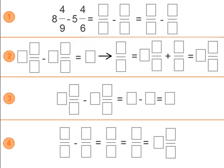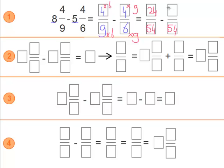Let's move on to a harder problem. This problem looks a little scary but we'll go through it step by step. We have 8 and 4 ninths minus 5 and 4 sixths. We need to find a common denominator, so we multiply them by each other: 9 times 6 and 6 times 9, which equals 54. Now we multiply on the top: 4 times 6 and 4 times 9. The common denominator is 54, 4 times 6 is 24, and 4 times 9 is 36.